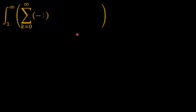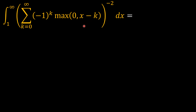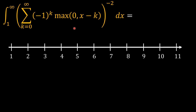Looking at our problem, let's go into the bracket: what is the summation from k equals 0 to infinity of negative 1 to the power k times the maximum between 0 and x minus k? We'll begin by drawing a number line starting from x equals 1, going all the way to infinity, and sequentially look at how this summation behaves in the gaps between 1 and 2, 2 and 3, 3 and 4, and so on.